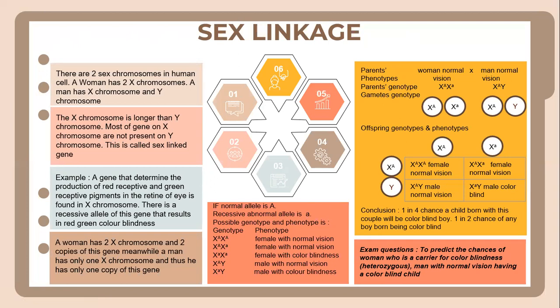This results in the expression of certain traits being dependent on the individual's sex. In humans, for example, traits like colorblindness and hemophilia are often sex-linked, with the gene responsible located on the X chromosome. This means these traits are more commonly expressed in males as they have only one X chromosome, while a female has two, providing a potential backup copy of the gene.